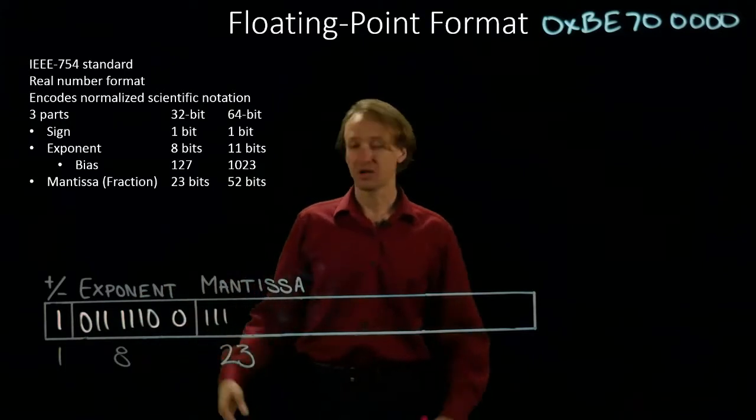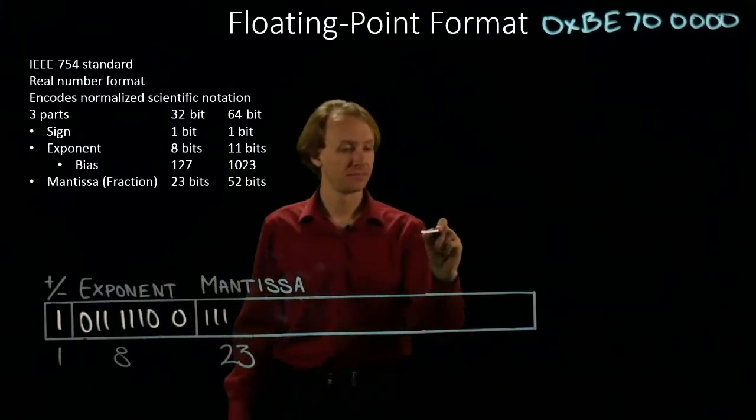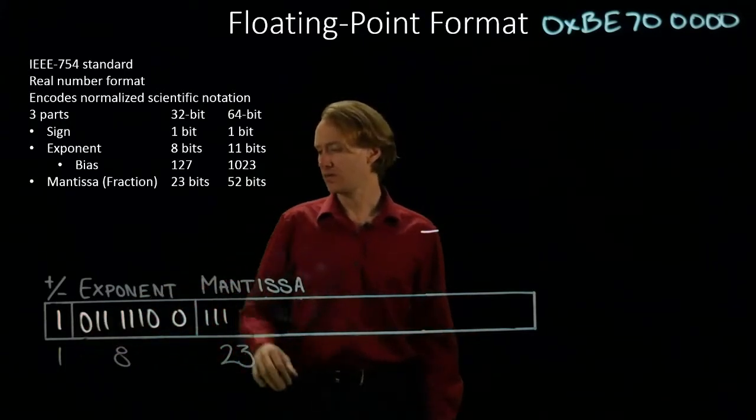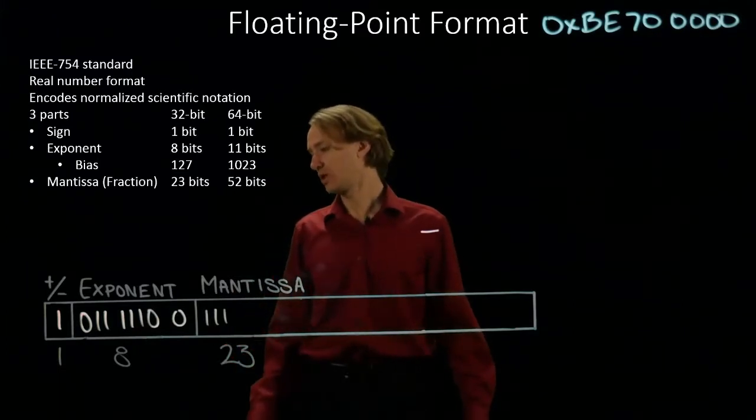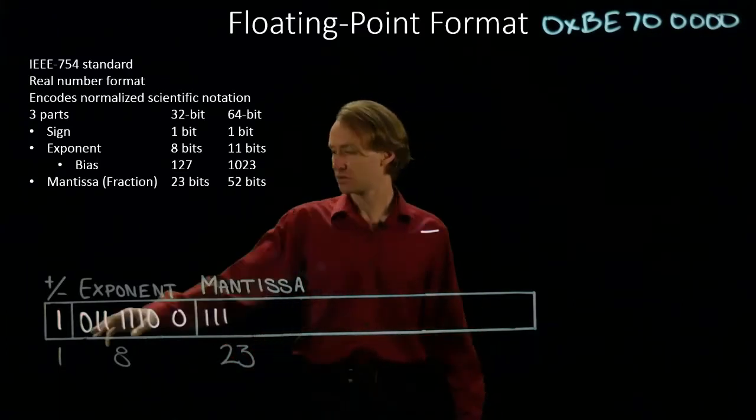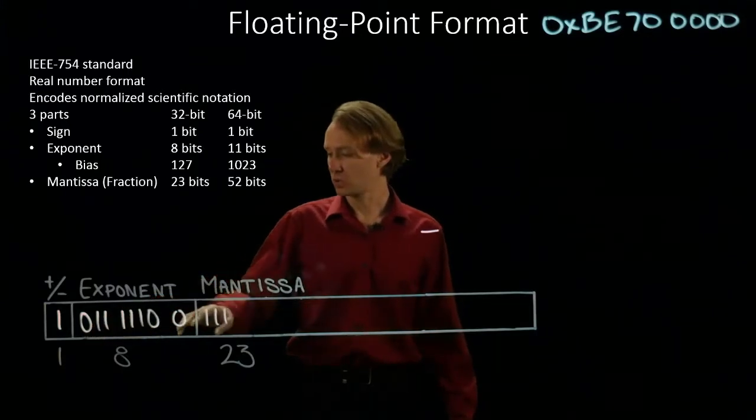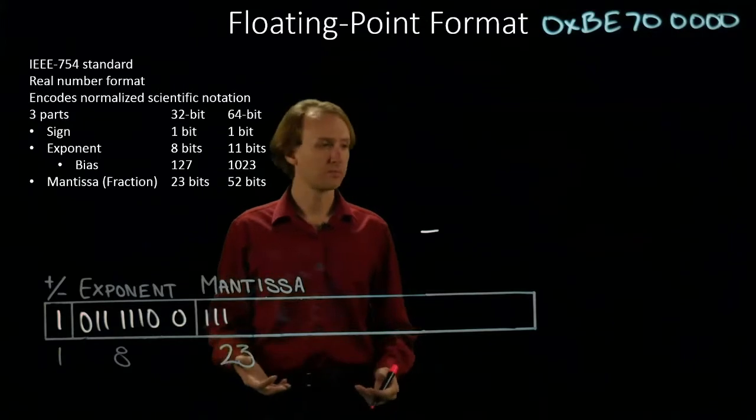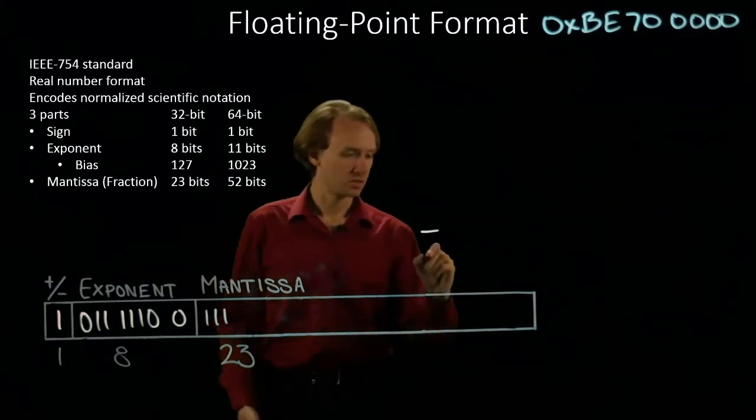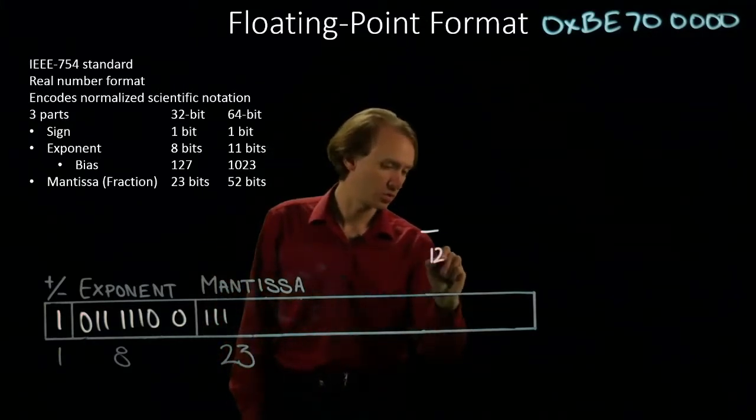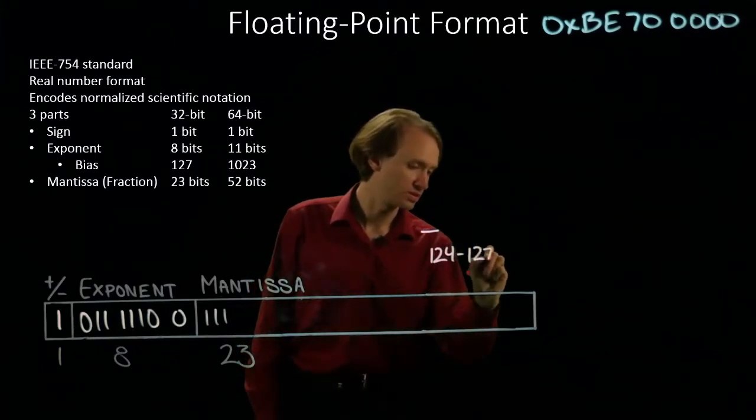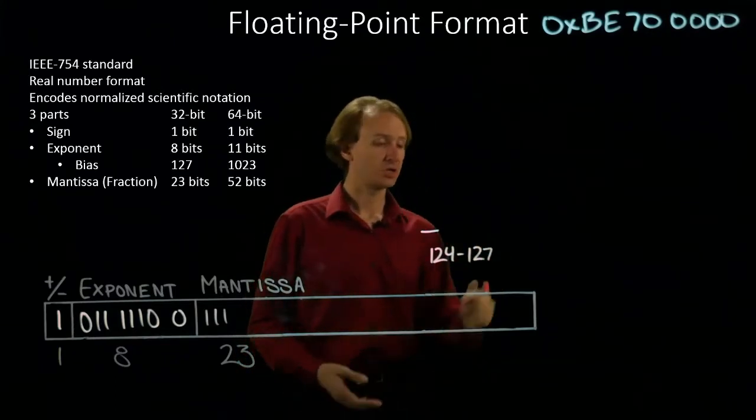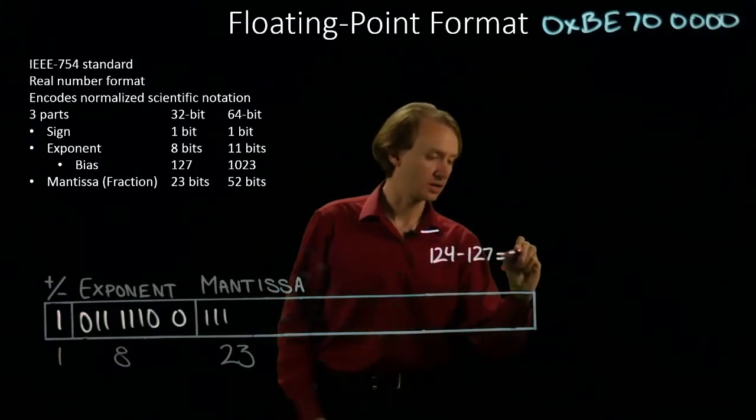I can notice that my number is negative. And I have an exponent that will be less than 1 after I've added my bias. This should give me 127 minus 3, which is 124. So I will have 124 minus 127 for my exponent, which is negative 3.